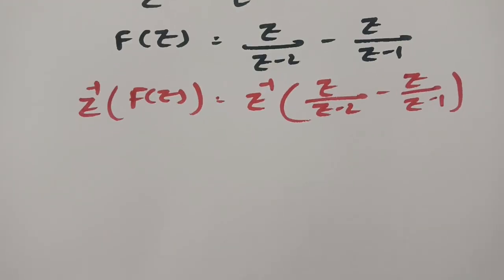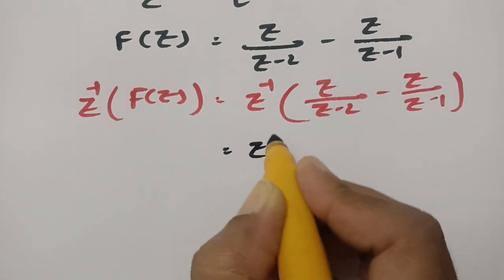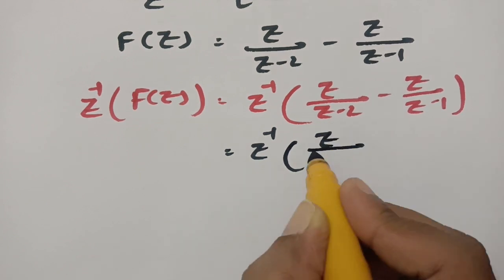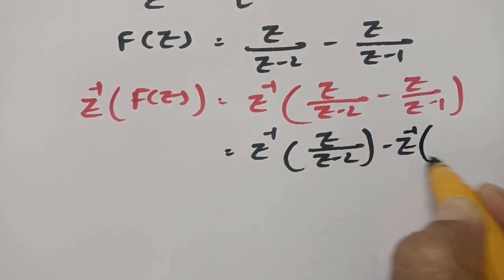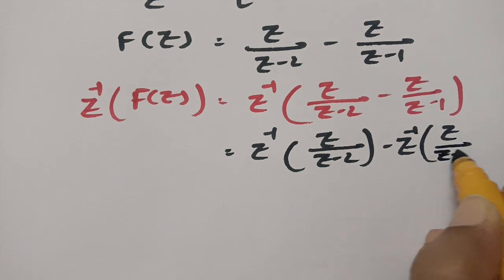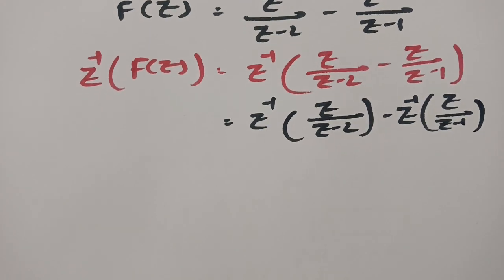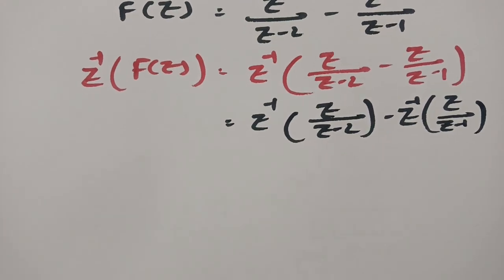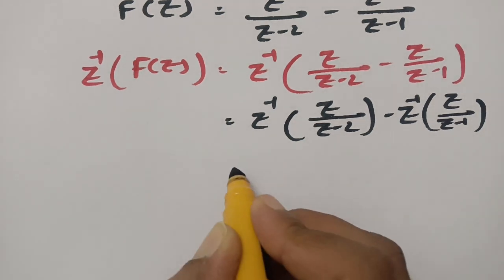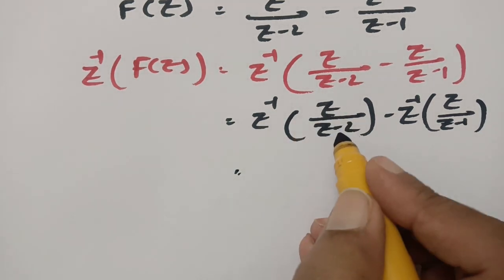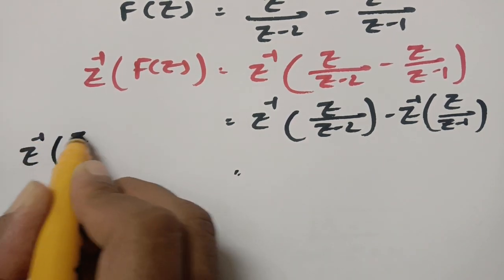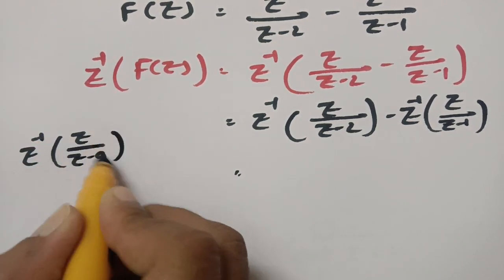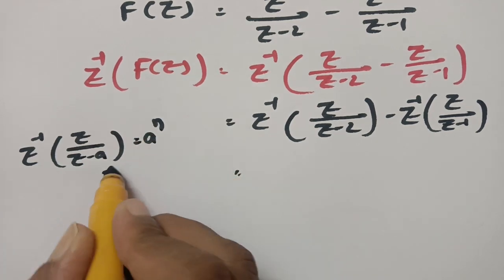The inverse Z transforms give us Z inverse of Z by Z minus 2 minus Z inverse of Z by Z minus 1. We have the formula: Z inverse of Z by Z minus A can be written as A power N.